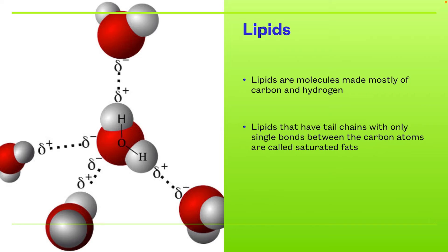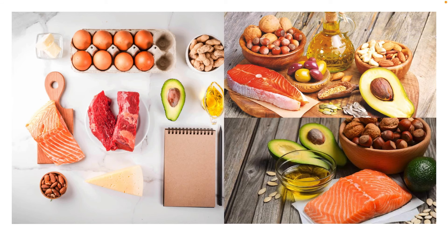Lipids. Lipids are molecules made mostly of carbon and hydrogen. Lipids that have tail chains with only single bonds between the carbon atoms are called saturated fats. This is what lipids look like. And this is the type of foods that have lipids: for example, salmon, avocados, seeds and nuts, and oil.